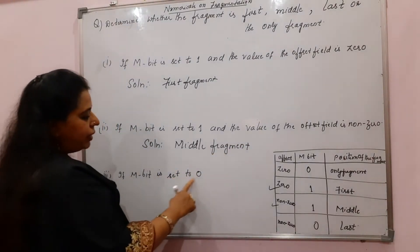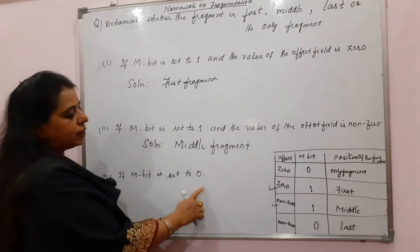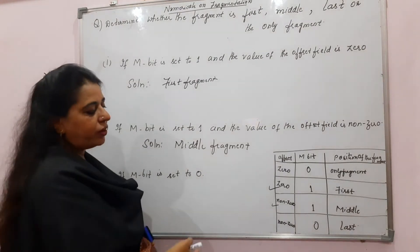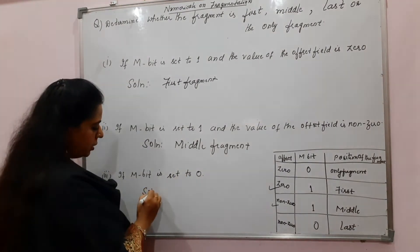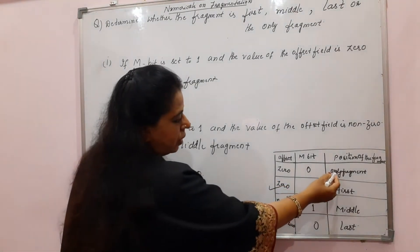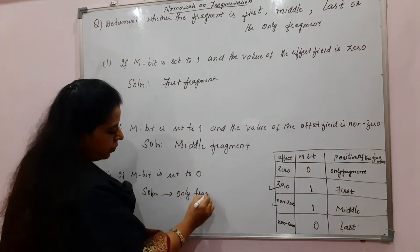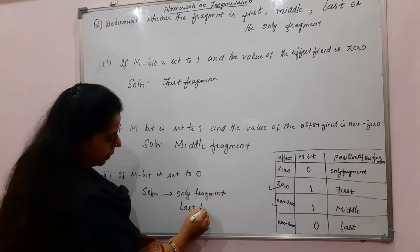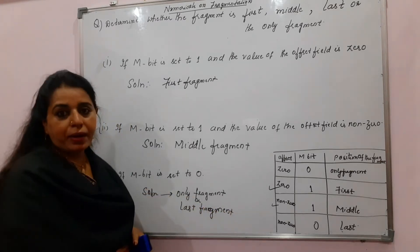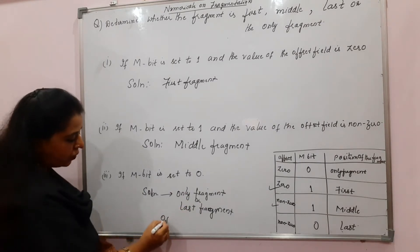Question 3: if M bit is set to 0. The question stops there — only the M bit is given. When M bit is 0, you have two possibilities. The fragment could be either the only fragment or the last fragment — you cannot decide between them. To decide whether it is the only fragment or the last fragment, the offset value is needed.